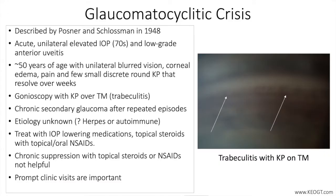Glaucomatocyclitic crisis, also known as Posner-Schlossman syndrome, is an acute unilateral disease process with mild anterior chamber inflammation and elevation of intraocular pressure that is recurrent. Damage to the optic nerve occurs after repeated attacks over a long period of time. The cause is unknown at this time, despite several hypotheses which have been explored since the first cases were reported by Posner and Schlossman in 1948.